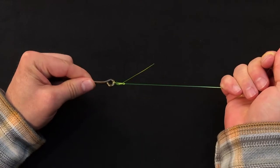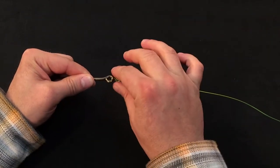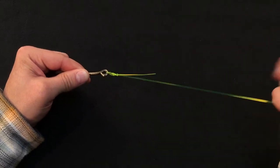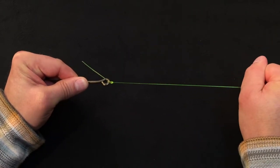Draw down to the eye of the hook. Here's where I want to moisten the knot. Get a good grip, draw nice and tight.